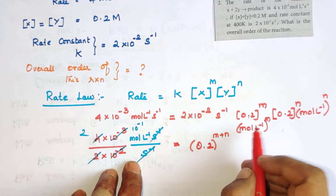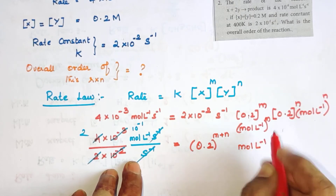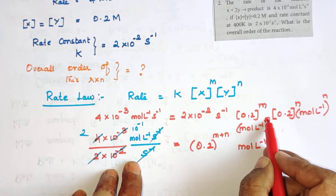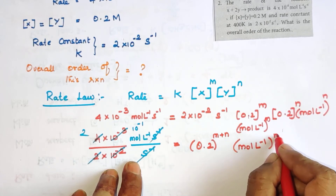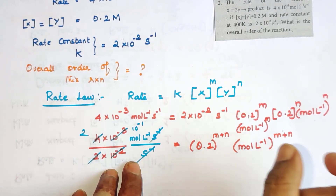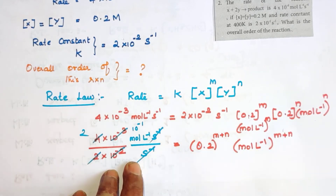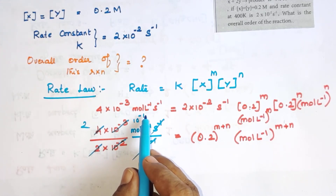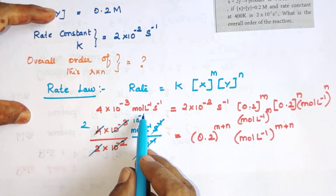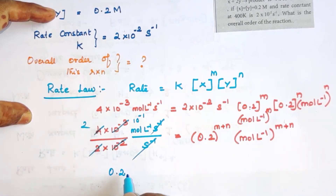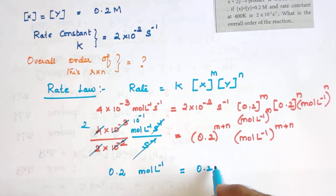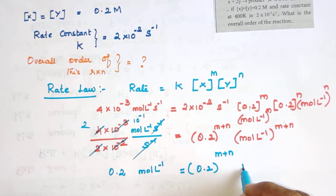Now 10 power minus 1 is 0.1, so the left side becomes 0.1 times mole per liter. We combine the right side: 0.2 power m into 0.2 power n equals 0.2 power m plus n, and mole per liter to the power m plus n. So the equation becomes 0.1 mole per liter equals 0.2 power m plus n, times mole per liter power m plus n.